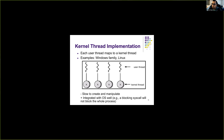One problem with kernel-level threads is that they are slow to create, because thread creation requires a system call — we must communicate with the OS to create a thread. This leads to slow thread creation and additional overhead when switching threads. Thread operations are now slower because they require switching into the operating system.